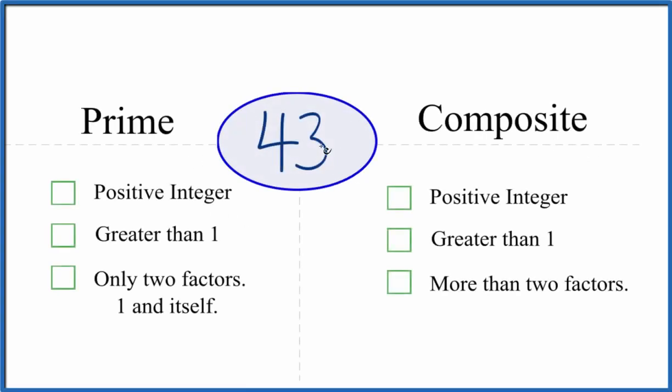Okay, let's take a look and see whether 43 is a prime number or a composite number. And here's how you can do that. Let's look and see first if 43 is prime.